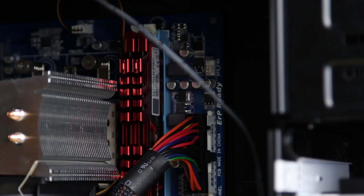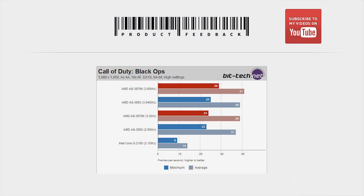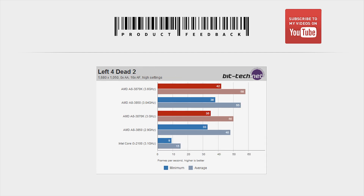Benchmarks are a bit useless without something to reference them with, so I did some research and came across benchmarks from BitTech, who compiled a list of different processors tested under the same circumstances. Looking at the specific advantages of the APU, in Call of Duty: Black Ops the APU managed an average of 40fps, which is easily playable, while a more expensive Intel alternative only managed 14fps. The same scenario holds for Left 4 Dead 2, with the AMD APU outstripping its rivals significantly.